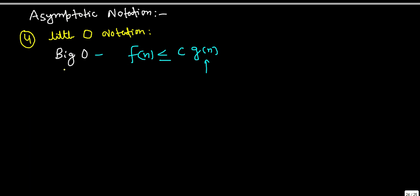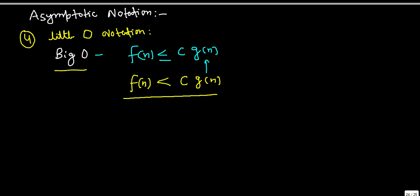The bound provided by Big-O might or might not be asymptotically tight. In little-o notation, the condition is slightly changed: f should always be strictly less than a constant multiplied by g(n), and the bound provided by little-o notation will always be tight.